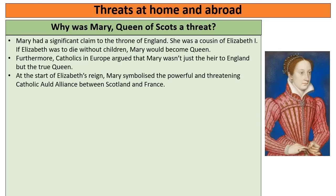At the start of Elizabeth's reign, Mary was in France and symbolised the powerful and threatening Catholic alliance between Scotland and France. She was not only Queen of Scotland but, because she was married to the King of France, she was also Queen of France — two very powerful countries surrounding England. In Mary, Elizabeth felt very vulnerable.